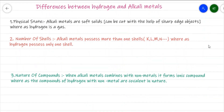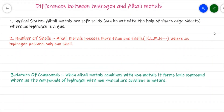The very first difference is physical state. As everyone knows, alkali metals are soft solids — they can be cut with the help of a knife or sharp-edged object. However, hydrogen is a gas. So the first point of difference is physical state: all alkali metals are soft solids, whereas hydrogen is a gas.